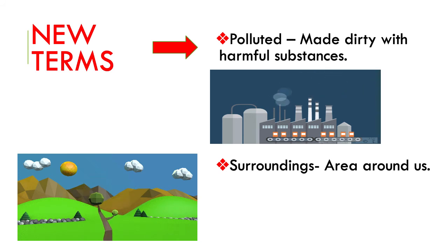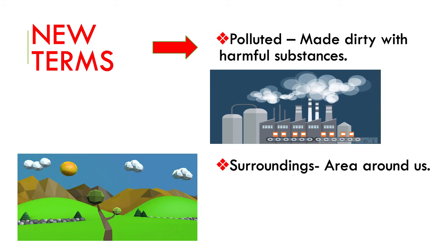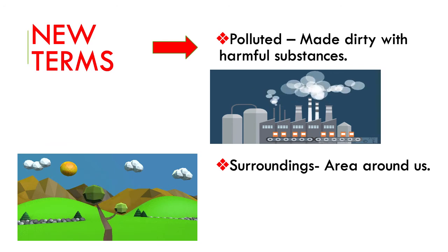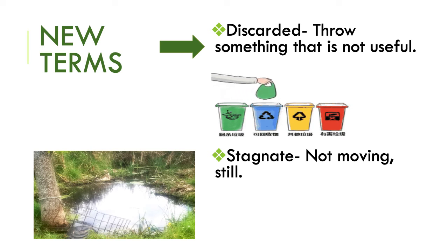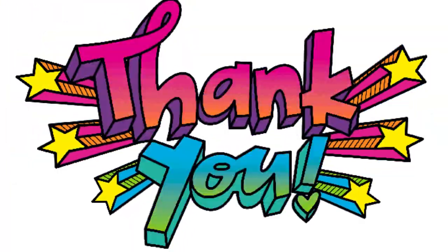Let's recap some of the new terms that we have learnt in this chapter. Polluted: made dirty with harmful substances. Surroundings: area around us. Discarded: throw something that is not useful. Stagnate: not moving, still. Thank you, and I hope the concept is clear to you.